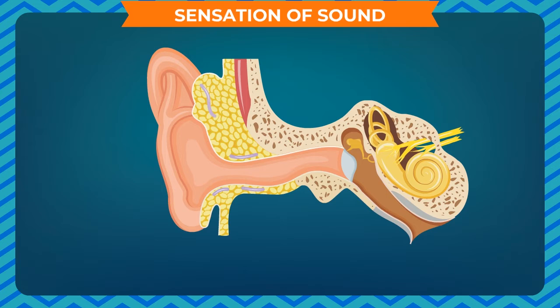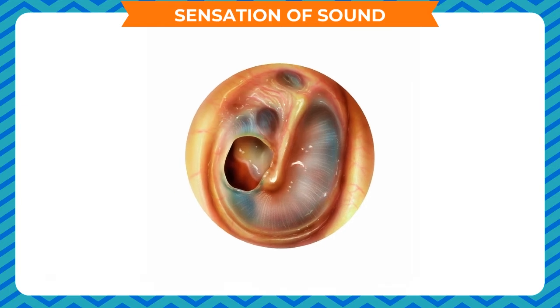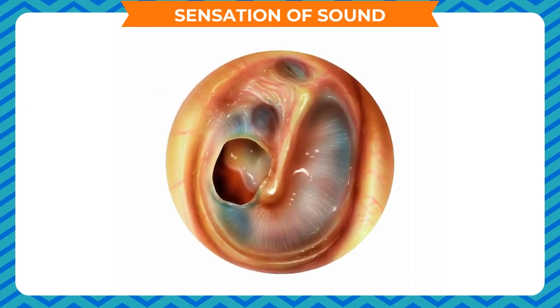Sensation of sound. When sound enters the ear, it travels down a canal at the end of which a thin membrane — the eardrum — is stretched tightly, like a stretched rubber sheet. Sound vibrations make the eardrum vibrate, which sends vibrations to the inner ear, and from there the signal goes to the brain. We must never put a sharp, pointed, or hard object into our ear, as it can damage the eardrum, impairing hearing.